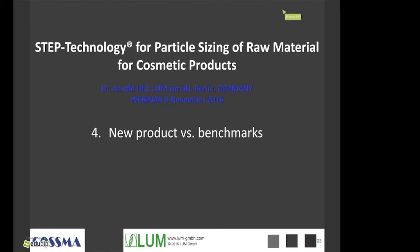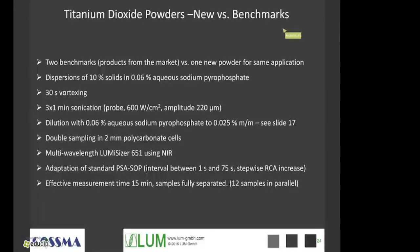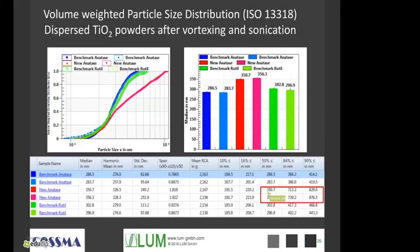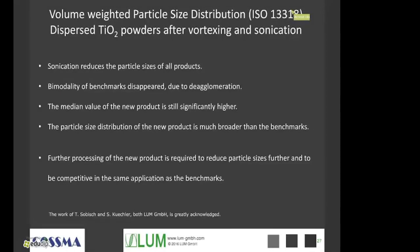There we have a comparison of a new product versus benchmarks based on particle size distribution. Here we have two benchmarks. Products from the market were selected to compare with one new formulation — and the formulation itself was not a formulation, it was a powder: titanium dioxide powder. We can see the deviation in the d50 value, and we can see it even better in the d84 and in the d90 value.